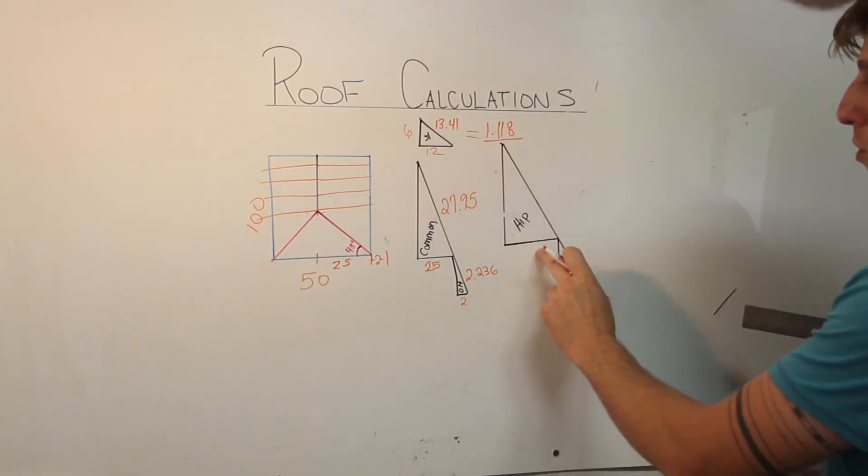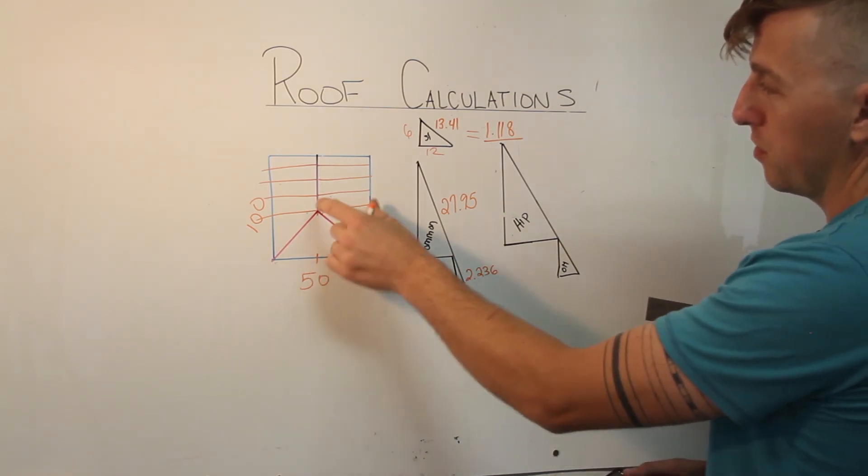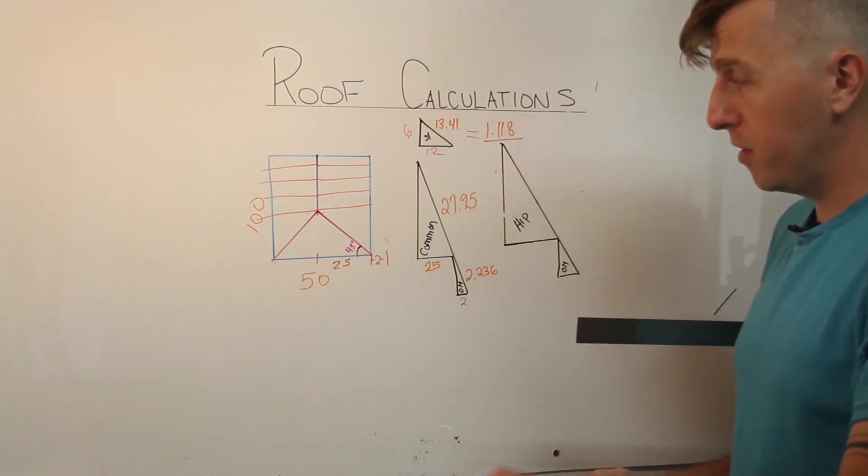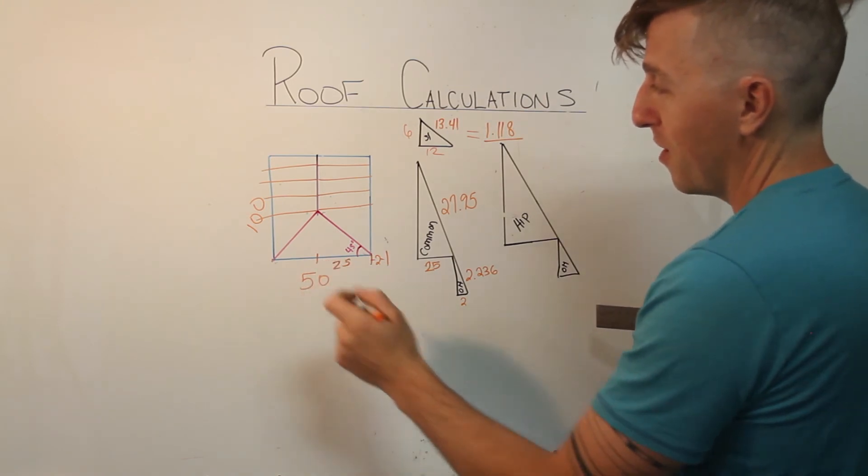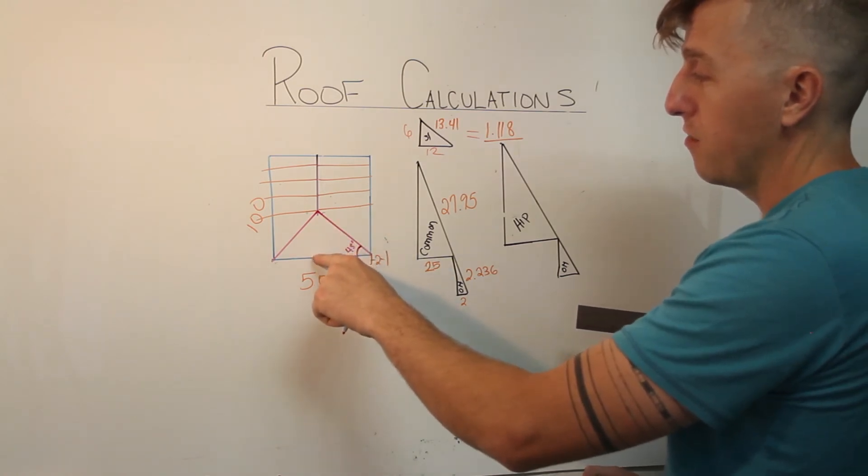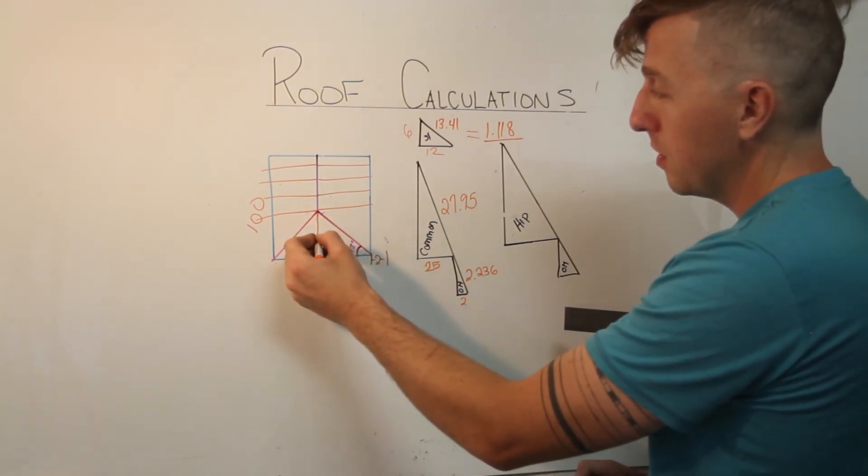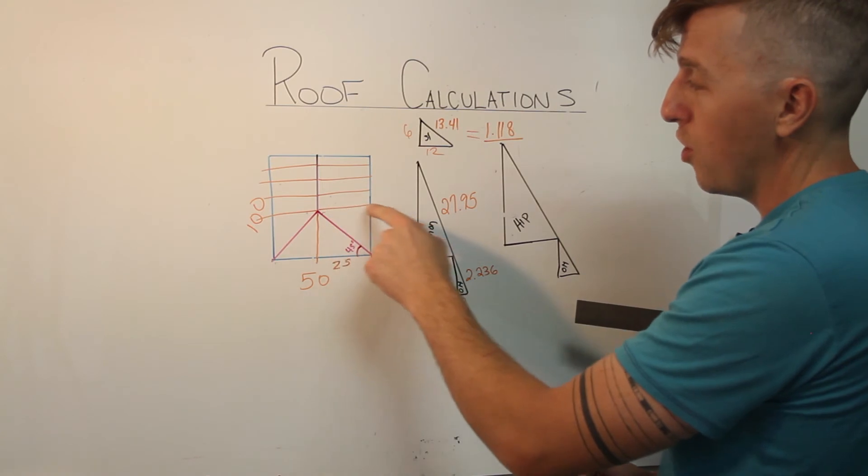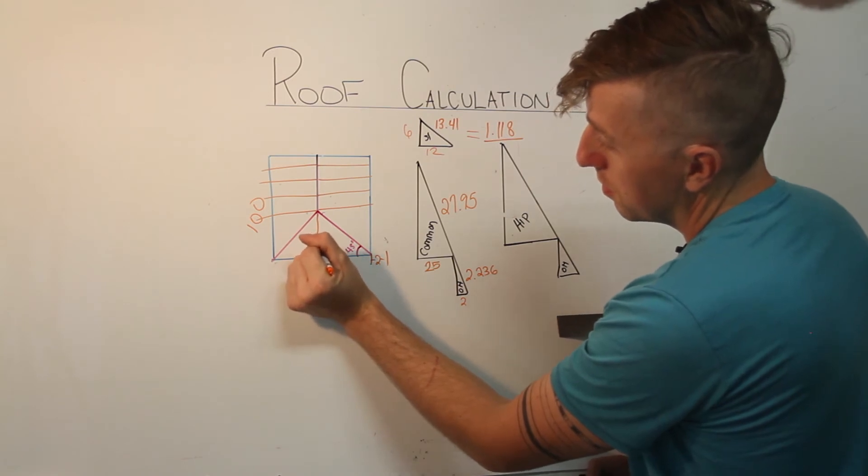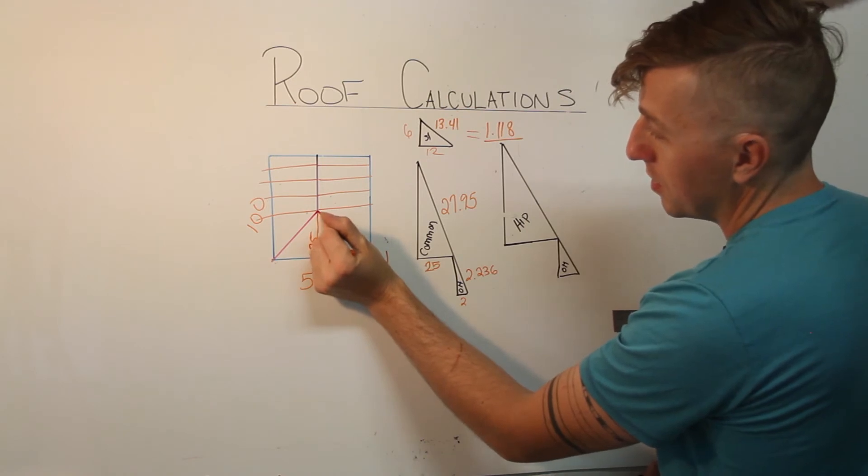Now how do we figure out what the run of the hip is? Because the hip is coming on this angle down here. It's much longer than the common. So remember, if we're looking down from the top, from bird's eye view, we can look at it this way. So every hip roof, the very last rafter that comes down is actually a common. So this distance is the same as the common run. So that's going to be 25 feet. Now if this comes at a 45 degree angle, that means that this is 25 feet as well.